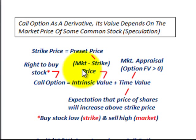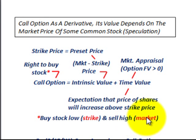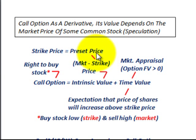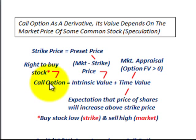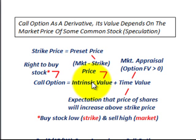What you're trying to do with this call option is you want to buy the stock at a low strike price and sell it at the high market price. So this call option gives you the right to buy the stock at this preset price, and then you can turn around and sell it at the market price to earn some money. All these call options are broken down into two elements: the intrinsic value and the time value.